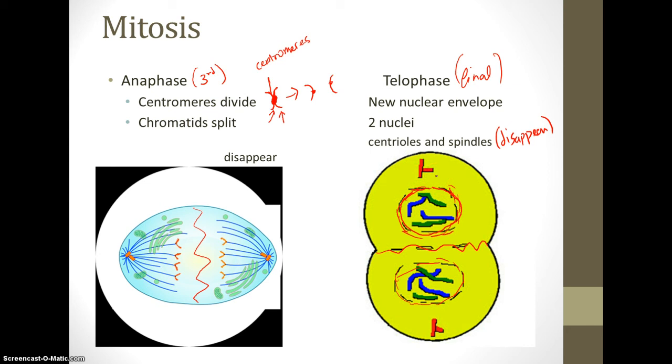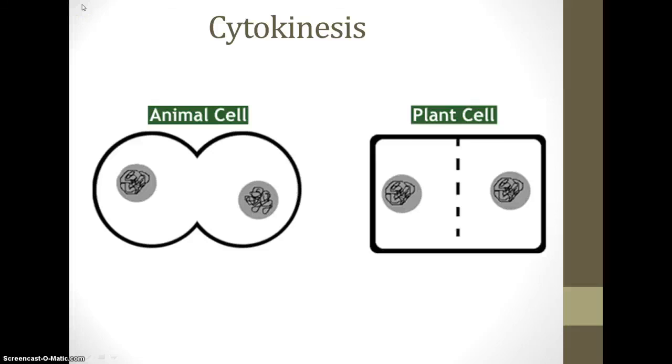Our final step is known as cytokinesis, which is its own individual step. Cytokinesis is the division of the cytoplasm. It is a little different in plant cells compared to animal cells, but we'll discuss that. This is the final stage of the cell cycle.